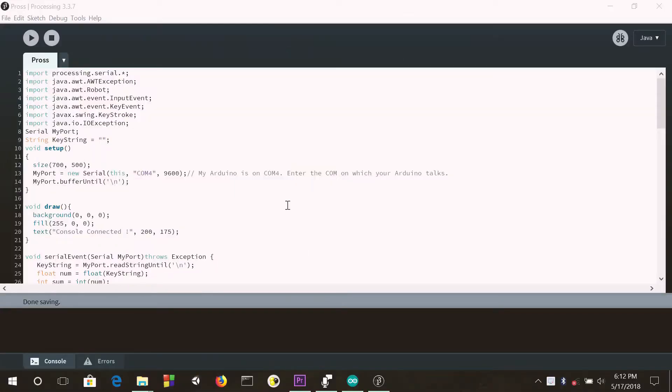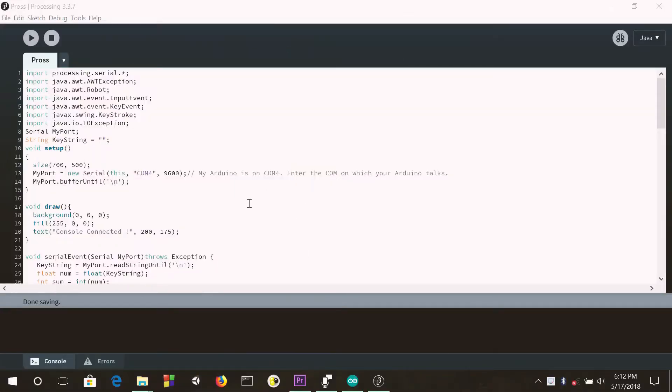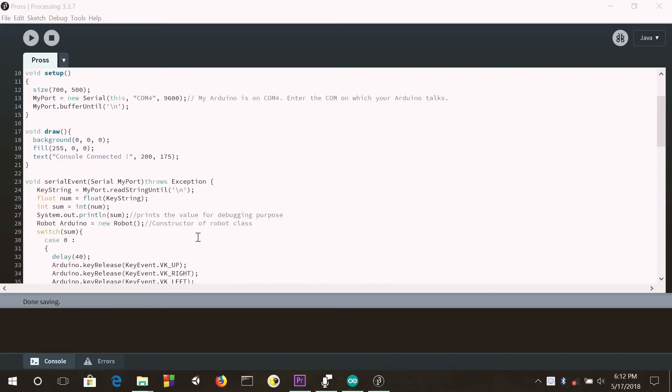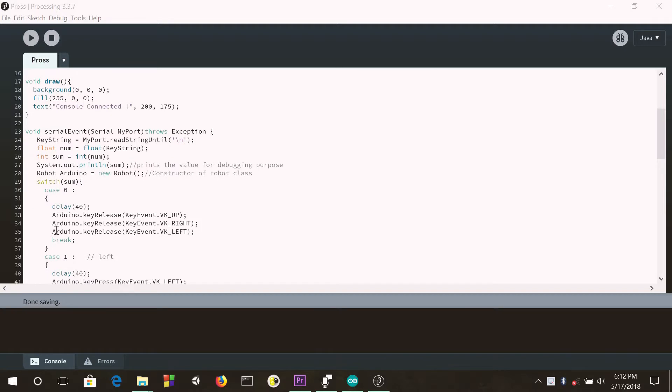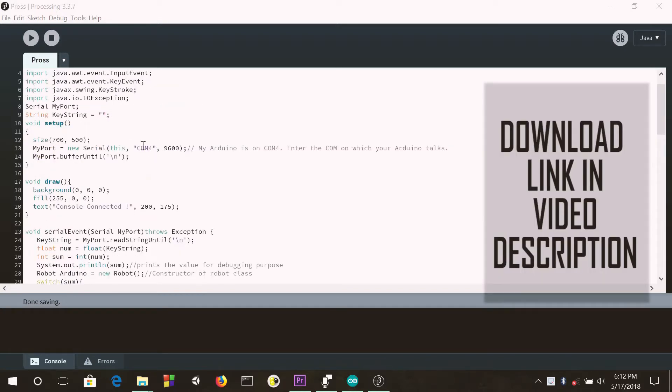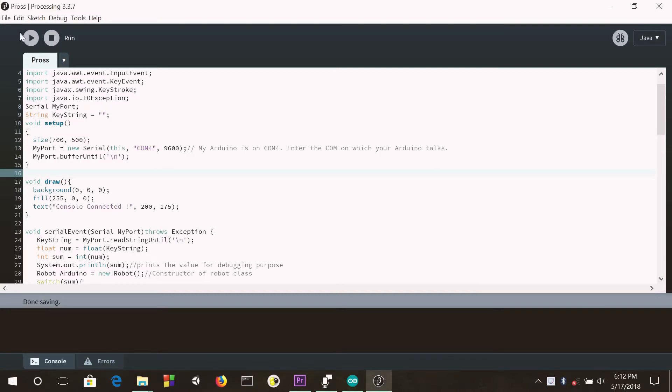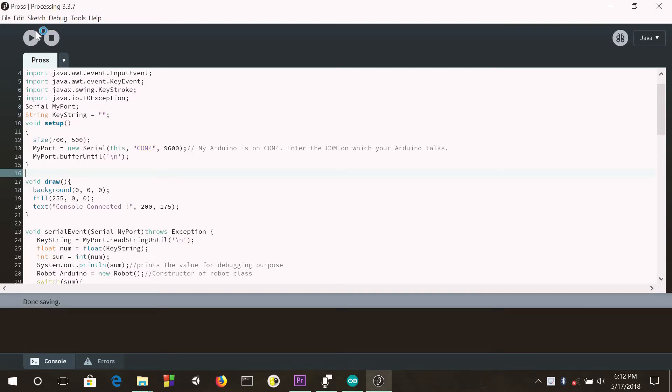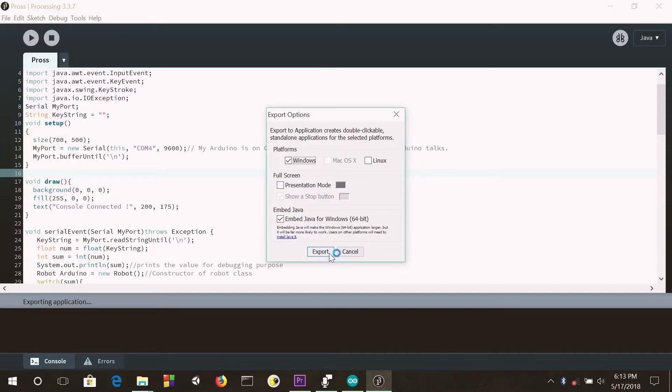And behold the Processing script. Here, we construct a robot class which allows us to duplicate the keyboard process and we send the buttons to be pressed by providing cases. You can download the script from the link in the video description. Make sure you change the COM4 port to your COM port. And once it's working, when you hit the run button, export an application file so that you can use the controller instantly like any other console.